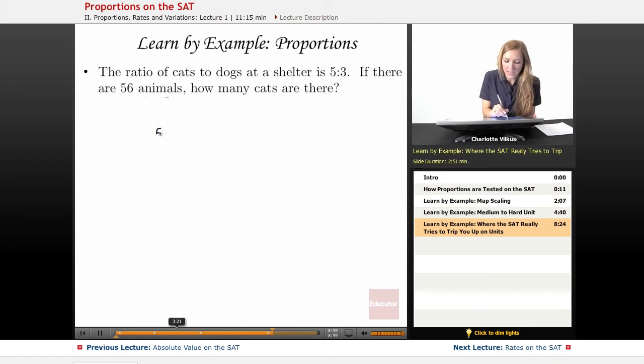So the ratio that I'm given is five cats to three dogs and I want to know if I have 56 animals, how many cats I have.